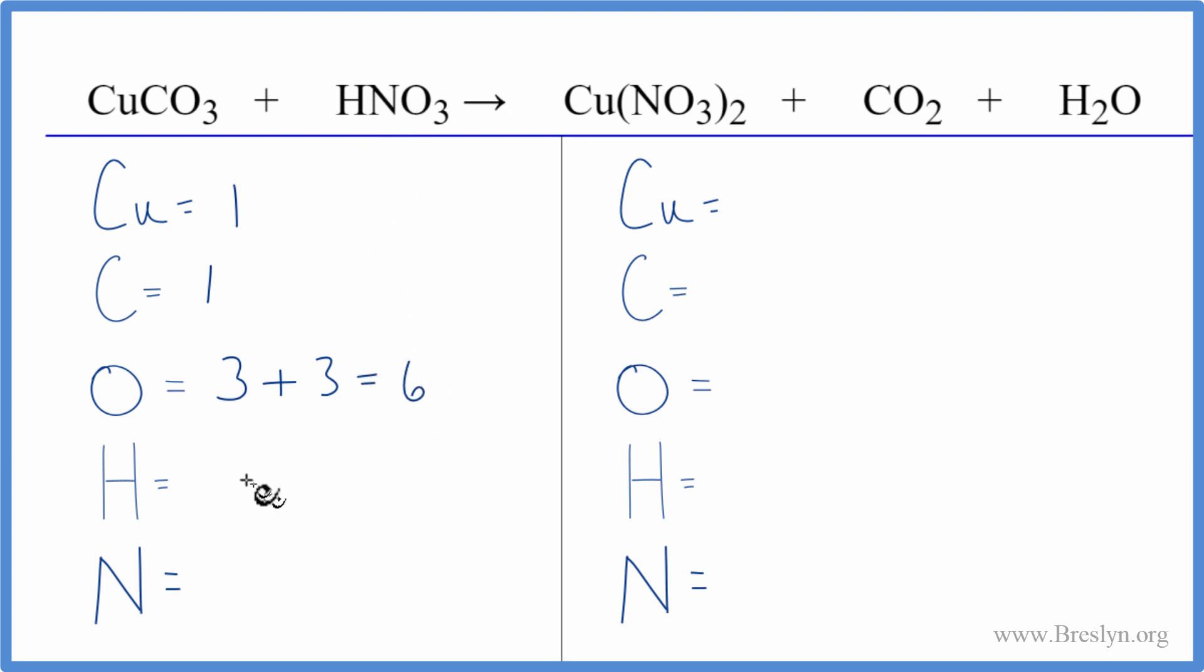One hydrogen and one nitrogen. On the product side we have one copper, one carbon, and then oxygens. Two times three is six, plus two, seven, eight, plus one, nine. So we have a total of nine oxygen atoms on the product side.